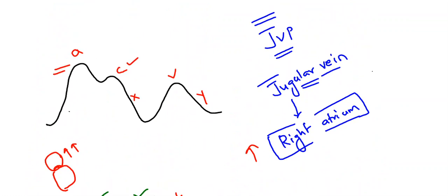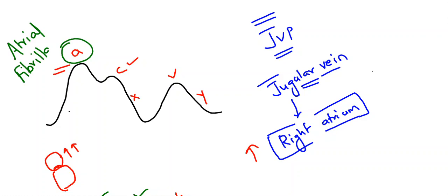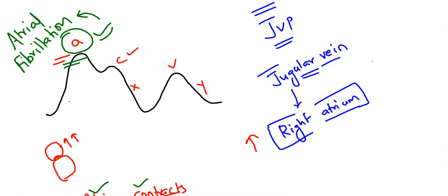In some conditions, notable changes occur. In atrial fibrillation, atrial contraction is so fast that the A wave cannot be recorded — so we do not get A waves in atrial fibrillation. On the other hand, we will have prominent A waves in tricuspid stenosis.